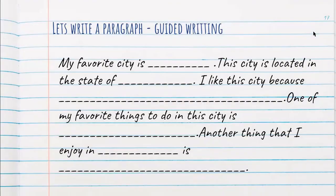All sentences should begin in a different manner. You can see the sentence starters already provided: 'My favorite city is...', 'This city is located...', 'I like this city because...', 'One of my favorite things to do...', 'Another thing I enjoy in Jaipur is...' I want you to write one more concluding line. If you don't write it, that's fine — we will help you during your Zoom class. But right now, please finish this work in your notebooks.